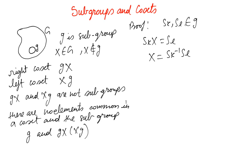We know SK belongs to G, and because G is a group, SK will have an inverse. The product of two elements which belong to G should give rise to an element which also belongs to G, which means X belongs to small g. But we started with the condition that X should not belong to g, which means there should not be any common elements between g and GX.